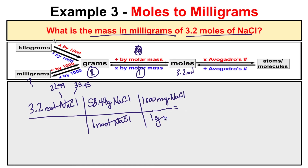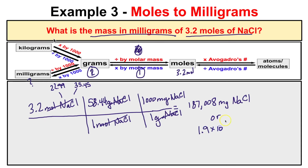Moles of NaCl on top cancel with moles of NaCl on the bottom; grams of NaCl cancel out as well. Getting our calculator out, we take 3.2 times 58.44 times 1,000 and we end up with 187,008 milligrams of NaCl. Using the correct number of significant figures in scientific notation, this is 1.9 times 10 to the 5th milligrams of NaCl. Let's take a look at another one.